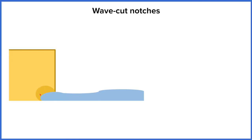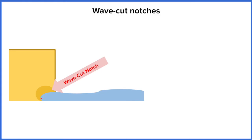Abrasion, the sandpaper effect, is also eroding the sides. We end up with this indentation — this small cavity. It's not really a cave, more of a circular indentation in the actual base of the cliff.